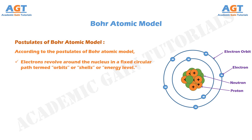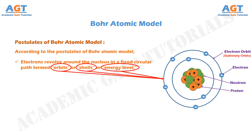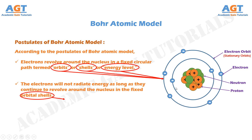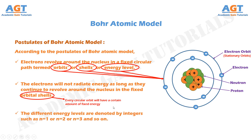According to the postulates of the Bohr atomic model: electrons revolve around the nucleus in a fixed circular path termed orbits, or shells, or energy levels. We can see the electrons in their fixed stationary orbits or shells or energy levels. The electrons will not radiate energy as long as they continue to revolve around the nucleus in the fixed orbital shells. Every circular orbit will have a certain amount of fixed energy. The different energy levels are denoted by integers such as N=1, N=2, N=3, and so on. These numbers or integers are called quantum numbers.